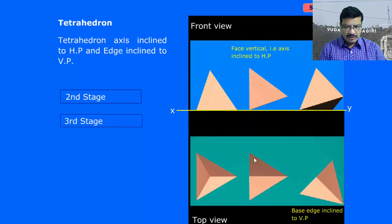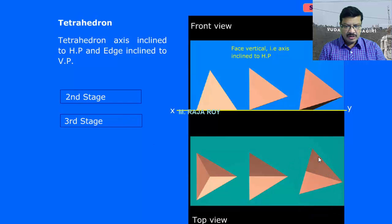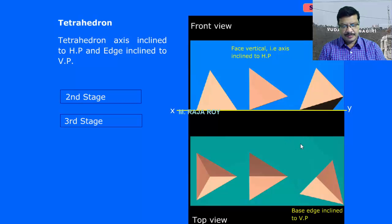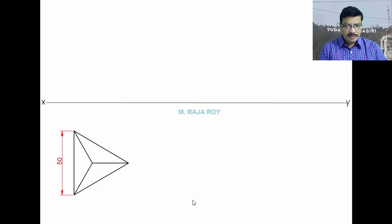In the third stage, you have to tilt this particular edge to 45 degrees angle. Then the final front view will be like this. Now, start with the XY line. As the true shape and size of the base is obtained in the top view, start the problem from the top view. This is the top view of the tetrahedron — side of the base is 50. This is the apex O, and P. A, B, C are the corners. The axis is represented with apex O and center of the bottom as P.